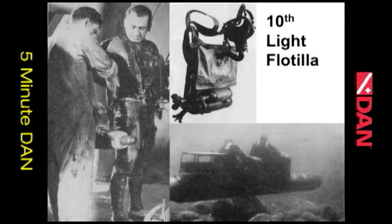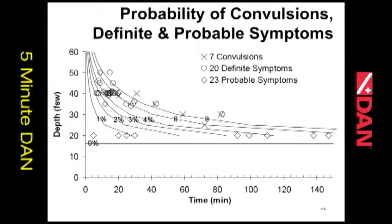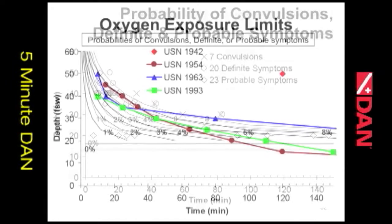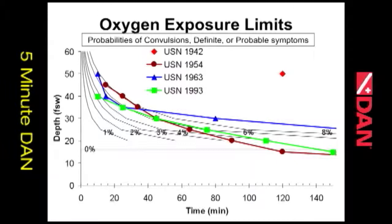They were all using a closed circuit pendulum rebreather. In the following slides we look at the model of the probabilities of convulsion — definite or probable symptoms — since it's a little bit more sensitive. What we see here are the U.S. Navy oxygen exposure limits. The 1942 limit is way off the map; by 1954 it had come down a bit; in 1963 it actually went up slightly longer, and the green ones are the limits in the current manual.